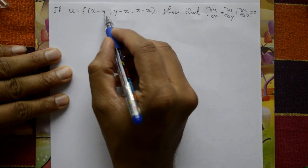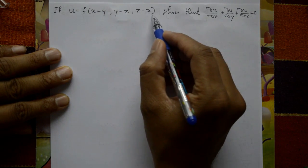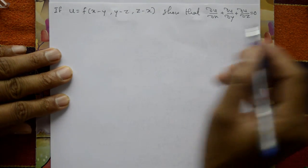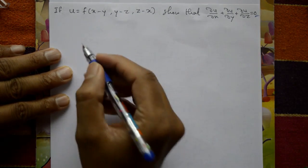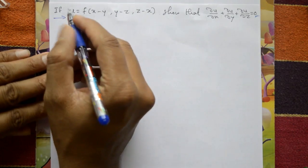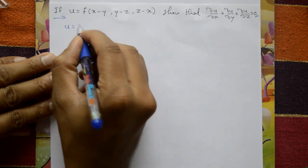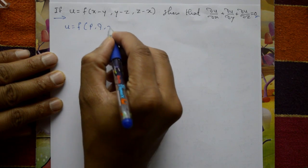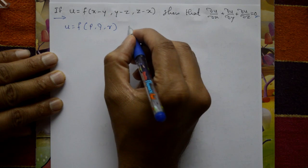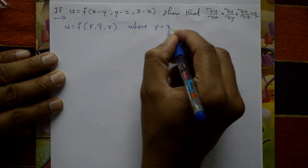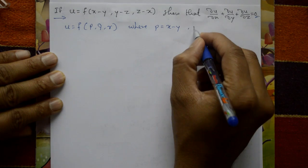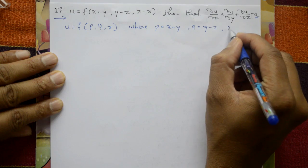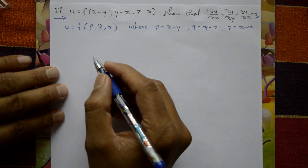Now the second problem: u = f(x−y, y−z, z−x). Prove that ∂u/∂x + ∂u/∂y + ∂u/∂z = 0. Let p = x−y, q = y−z, and r = z−x.